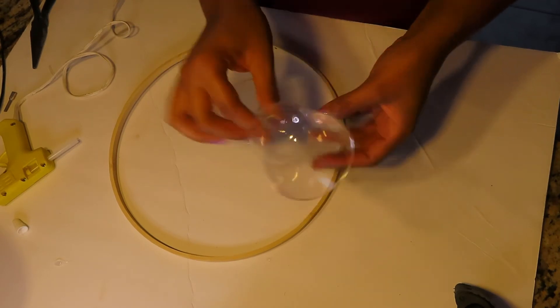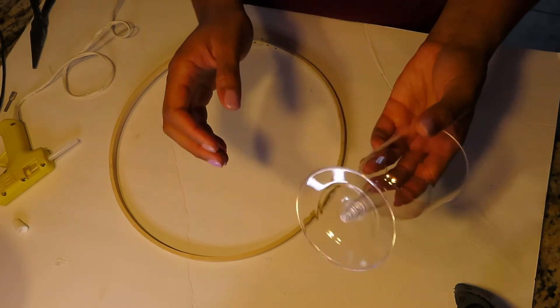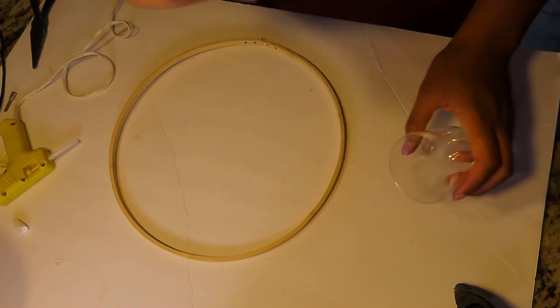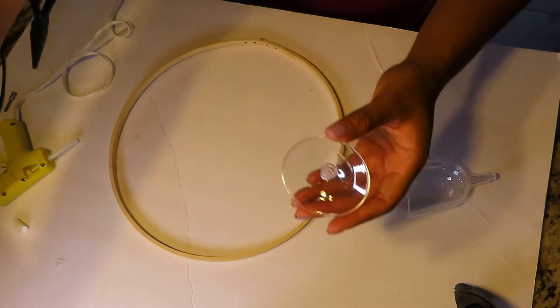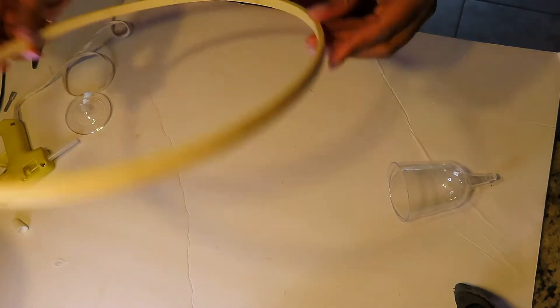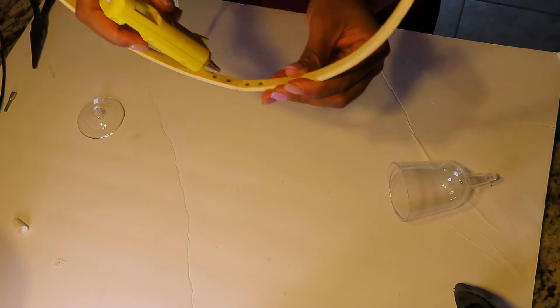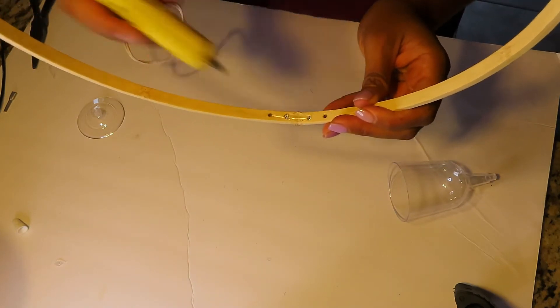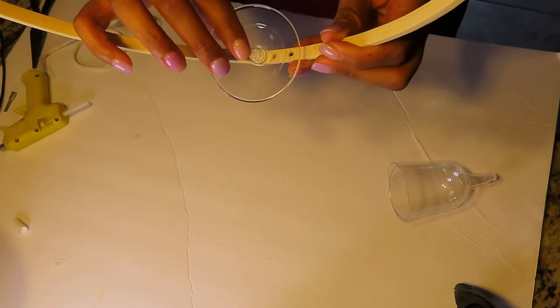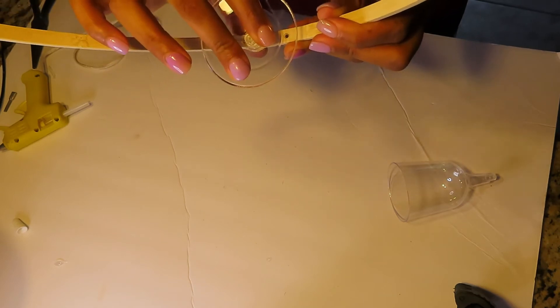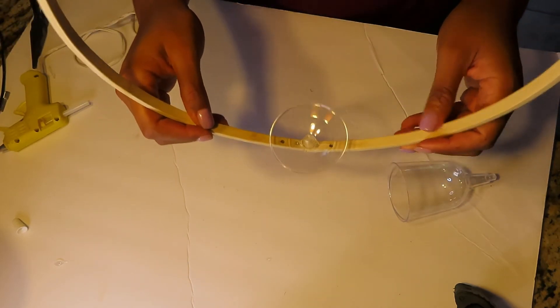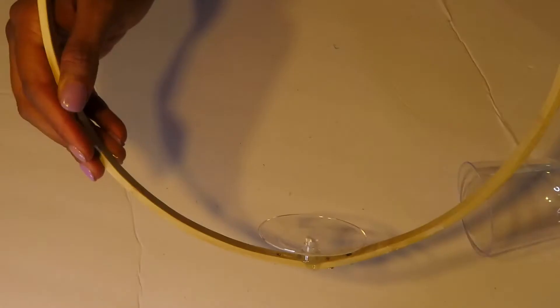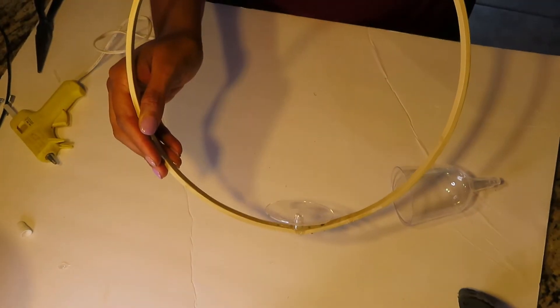Once that was finished, I purchased these dollar flutes that came probably about five in a pack from Dollar Tree. I'm gonna use the bottom of the flute and glue it to the embroidery hoop. That's what it looks like after it's glued on, just to give you a better view.